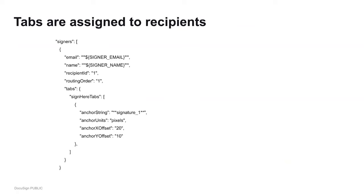We've been talking about how tabs are assigned to recipients — this is what that looks like in the JSON. When you have your recipients as part of your envelope, you might have a list of signers — this could also be a different type of recipient, for example carbon copies. Within the signer, you'll have your list of tabs, and here are the sign here tabs within that.